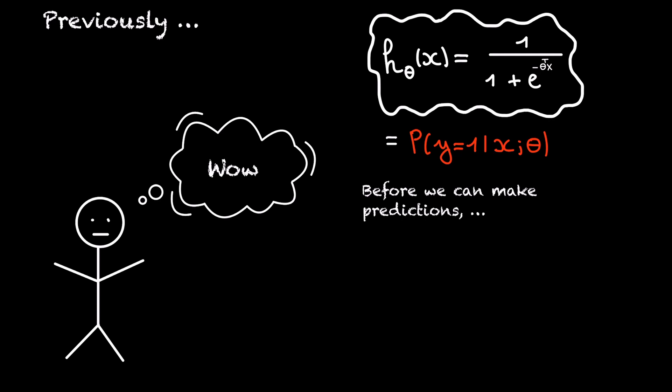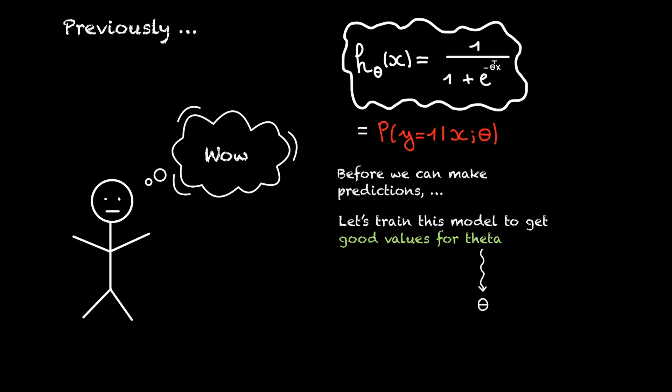Before we can make predictions with our hypothesis, we must train the model so that we get good values for the parameters theta. And that's what we will see right now. We will see how we can fit the parameters theta through the data, so that we get a hypothesis that will give accurate predictions.